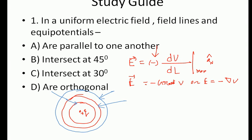Now, what is the electric field and how can we find it? The electric field E equals minus dV/dL — that is the rate of change along the length. The negative sign signifies that the field is in the direction where the potential is decreasing. As we move further from the charge, the potential is actually decreasing, and the vector points in the direction of decreasing potential — perpendicular to the equipotential surfaces.